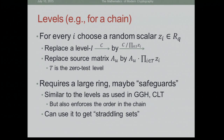Moreover, this is a little nicer to use than GGH and CLT in the sense that it enforces the order of products because you still have the chain, and you encode the entire matrix together as opposed to individual elements. In discussion with Ron, it seems you can just use it to encode Barrington as-is without any extra randomization on the side of the construction itself, and it still seems secure.